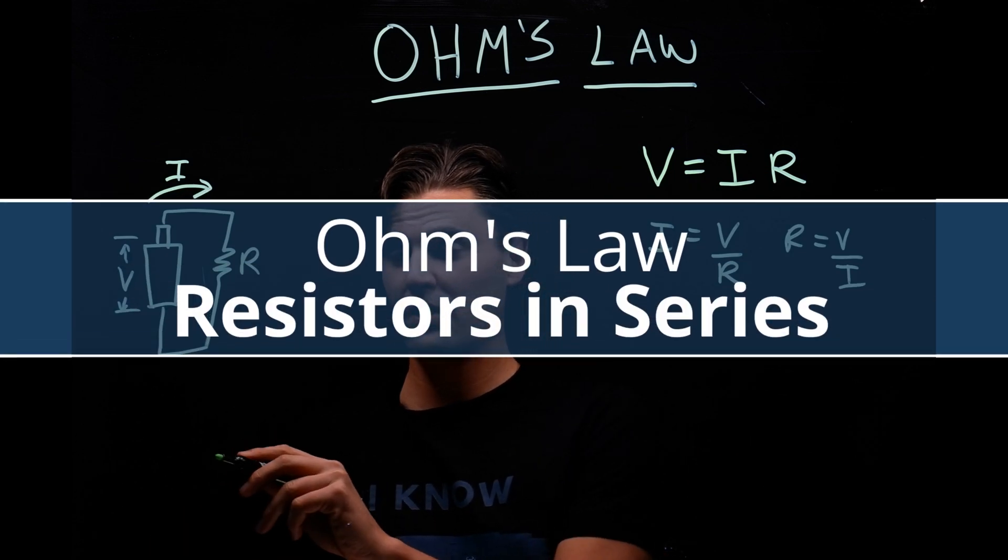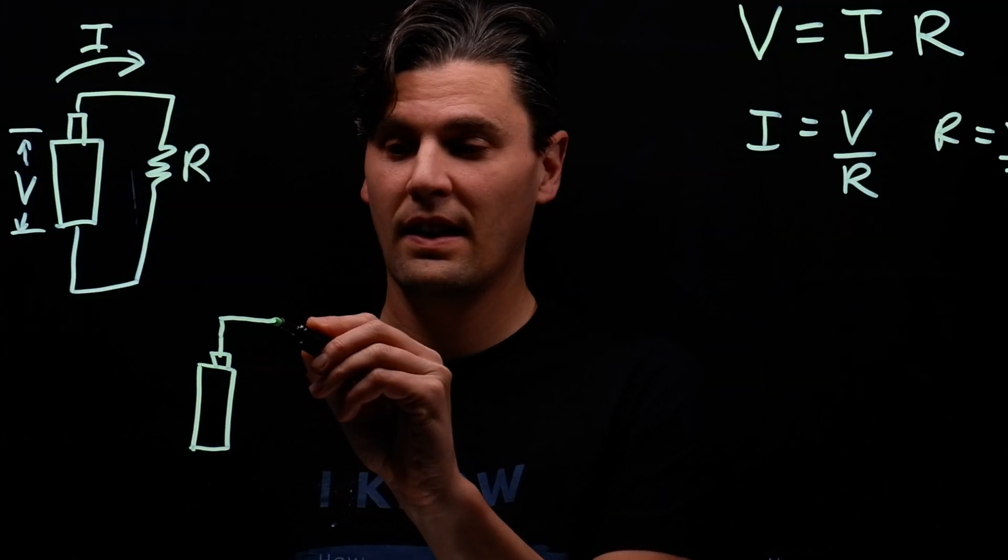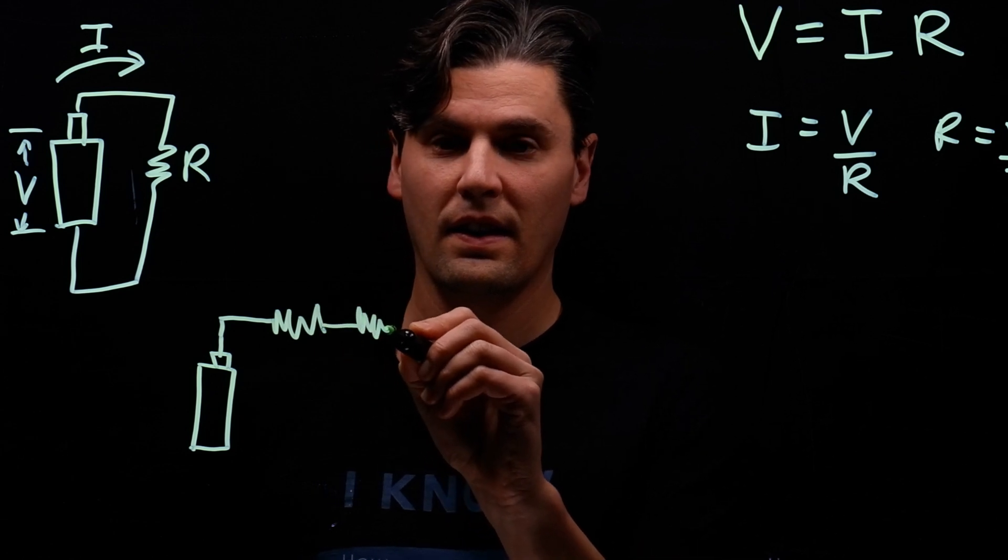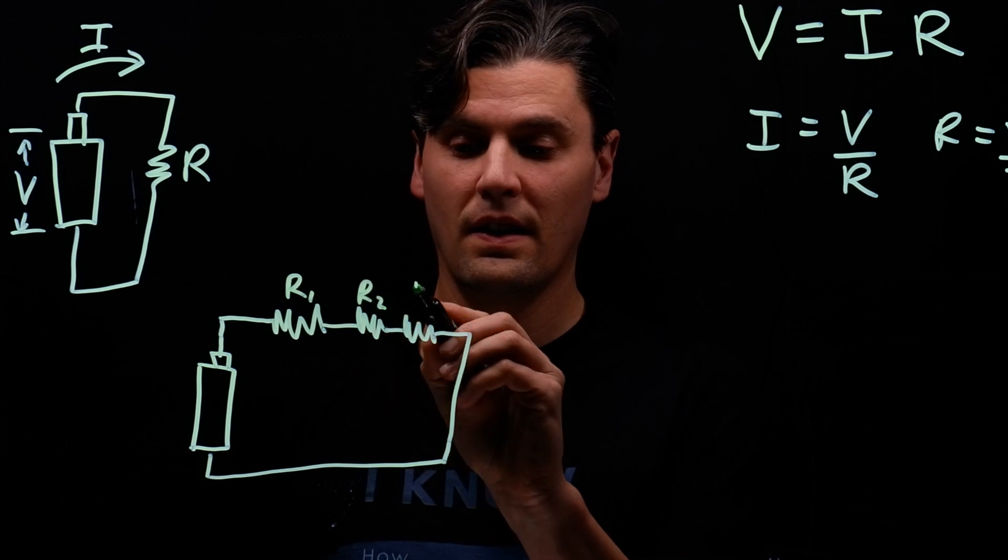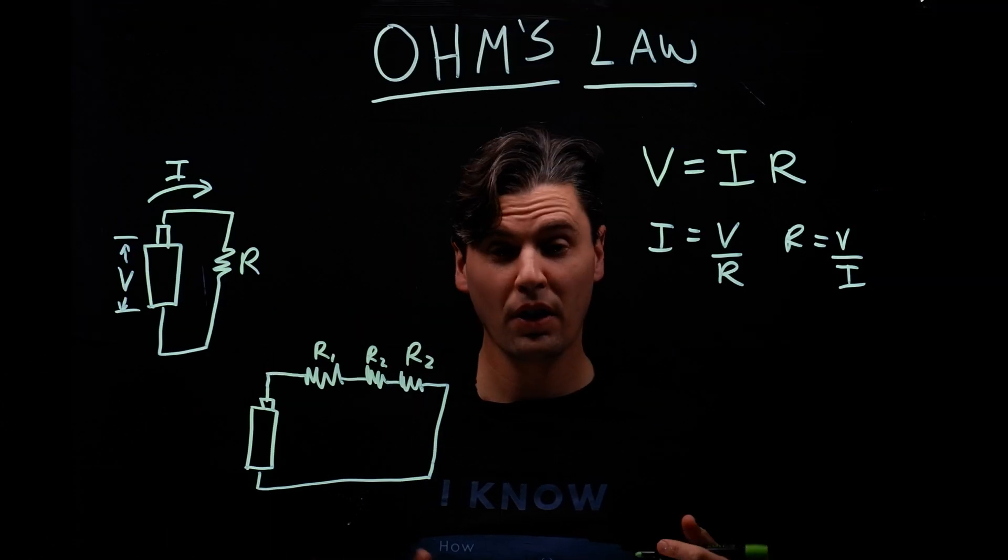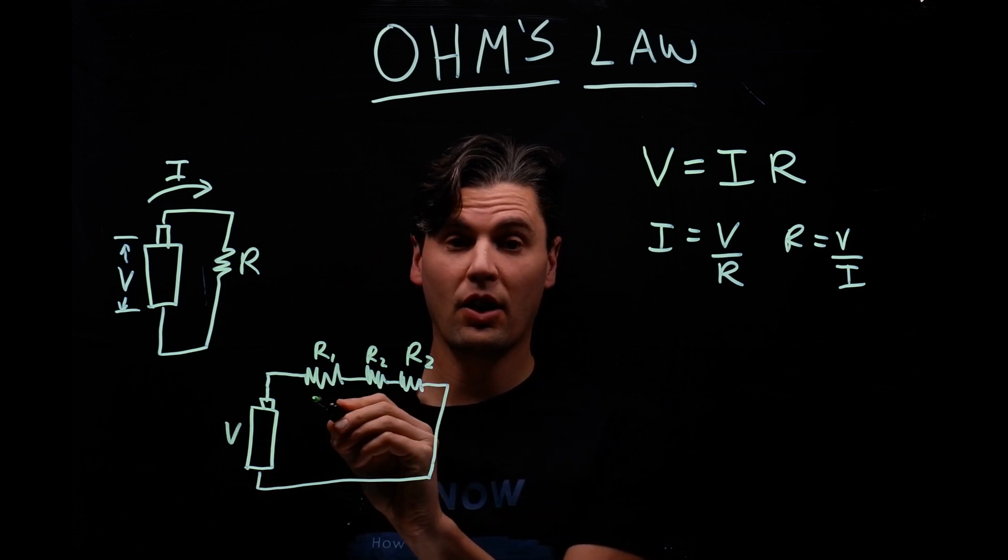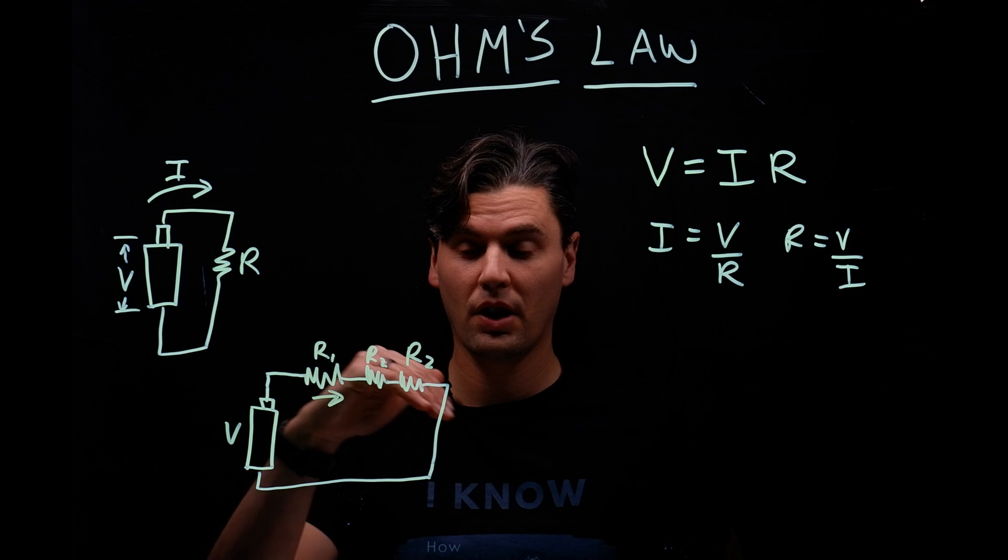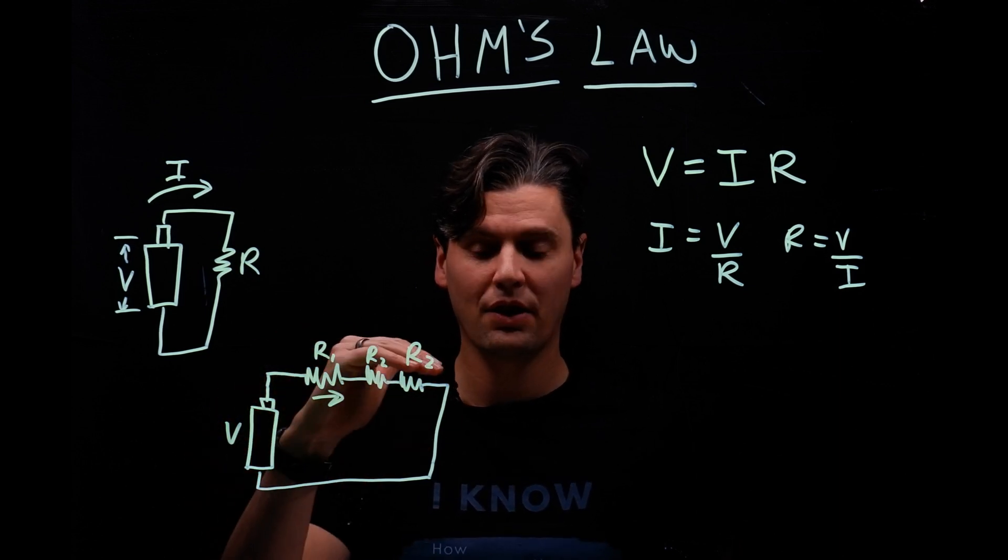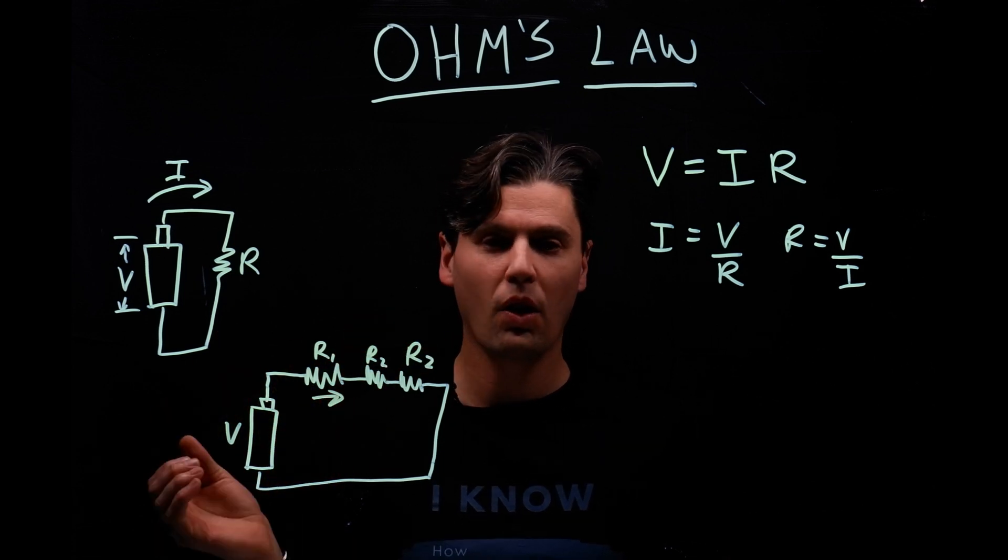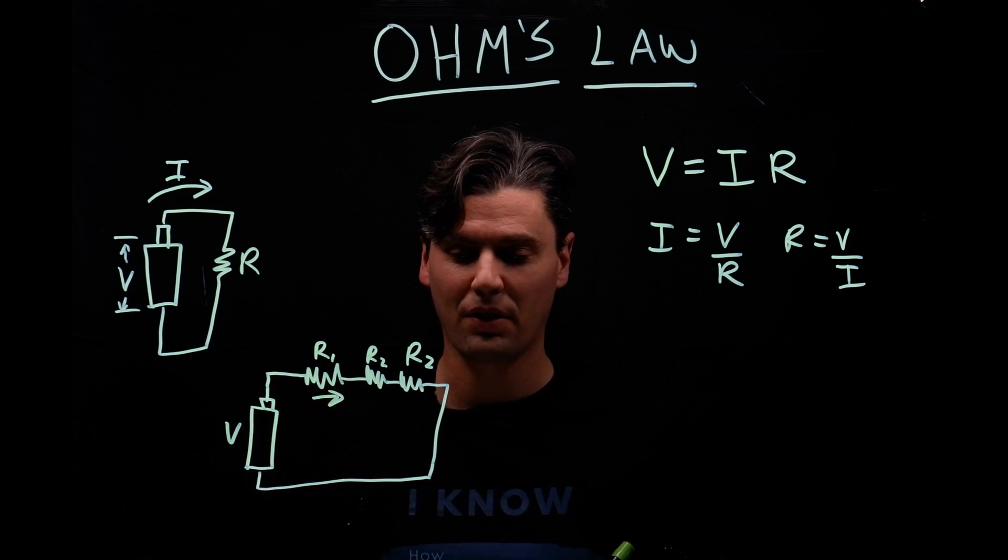So first we'll draw the series resistors. So they're called in series right now because you have a voltage here and then the current is going to be traveling through the circuit and it's going to go through the first one, the second one, the third one in series or in that order. There's no other choice that the electrons have. They're all going to be going through those same resistors.